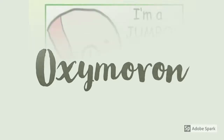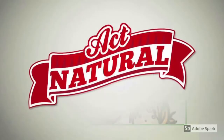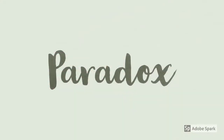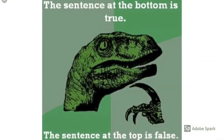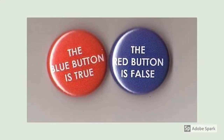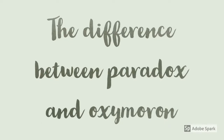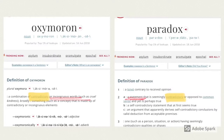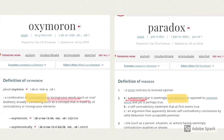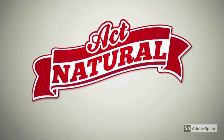Next up we're going to be talking about oxymorons. An oxymoron is when two words sit right next to each other that seem to contradict each other, like jumbo shrimp. Here's another example — act natural, when acting isn't really natural. A paradox is really similar to an oxymoron but there is a difference. A paradox is also contradictory but it's not just two words, it's a statement or a sentence. Here's an example where the blue button is true but the red button is false, therefore it's contradicting itself. While act natural is an example that fits more along the lines of an oxymoron, it can also be described as a paradox because it is a contradictory statement.